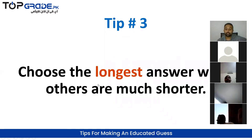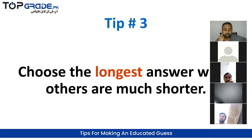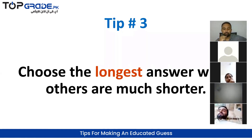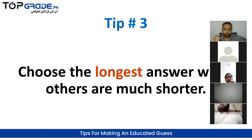If you see three short options and one long option, you can choose the long one. Why? Because the examiner has a problem: they have to give you enough information in the answer to enable you to answer the question. If the answer is incomplete, it would be wrong.